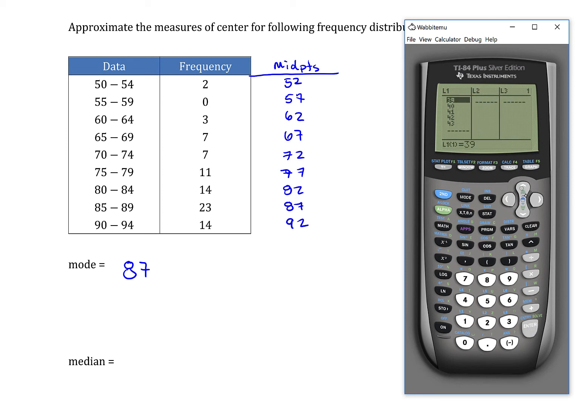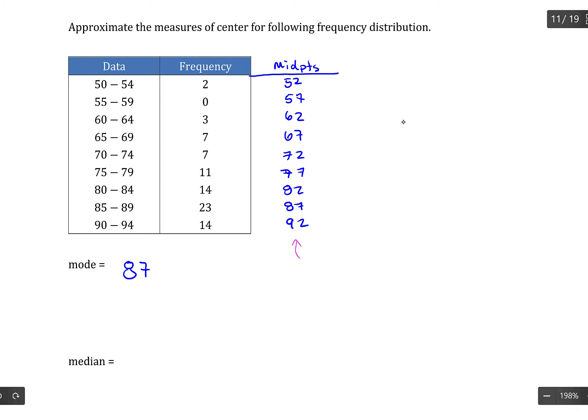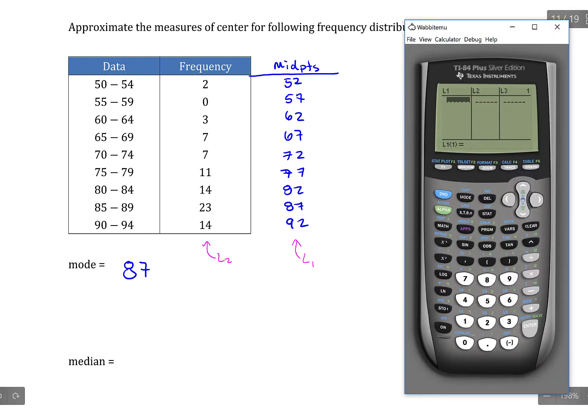So clear out any data that you have in your lists already. And L1 is always going to be your midpoints. And L2 is always going to be your frequencies. So you don't have to worry about where things go in this situation. So you just need to type in your midpoints and frequencies into the list.